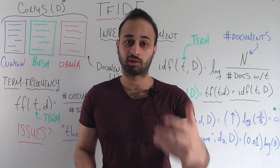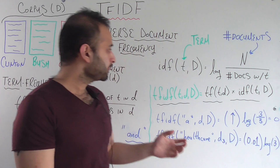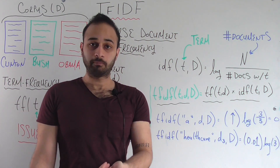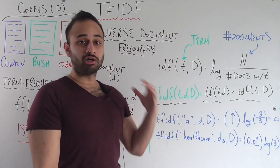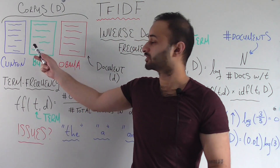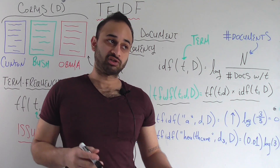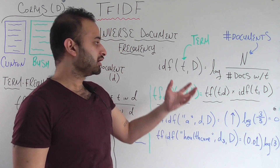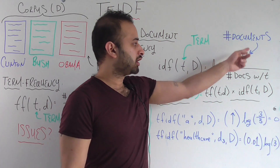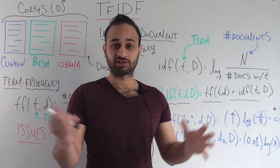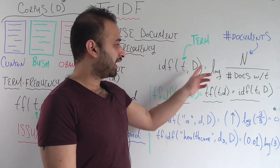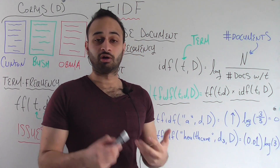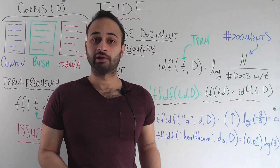That's where inverse document frequency comes in. The inverse document frequency is a function of two things: a given term, and large D — the entire corpus. The formula — and there are many different variations — tells the same story: we have the log of large N, which is the number of documents in our corpus (for us that's just three), divided by the number of documents that contain the term t. Here's the story that this equation is telling.